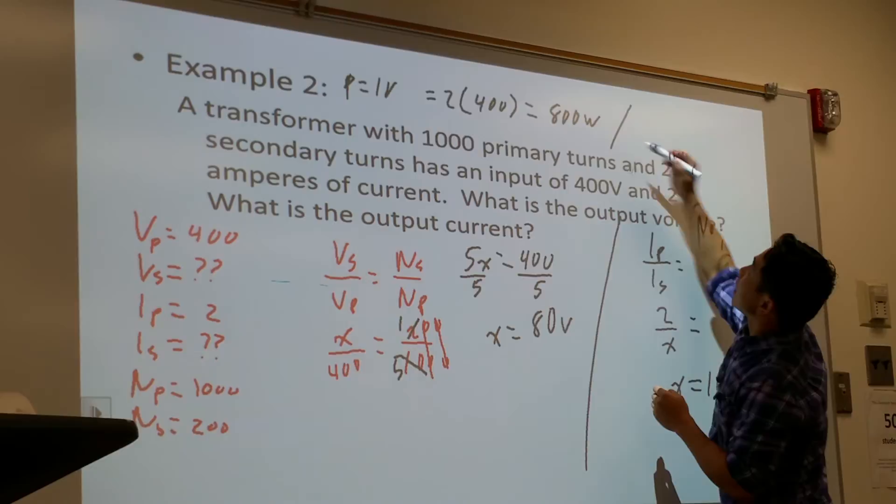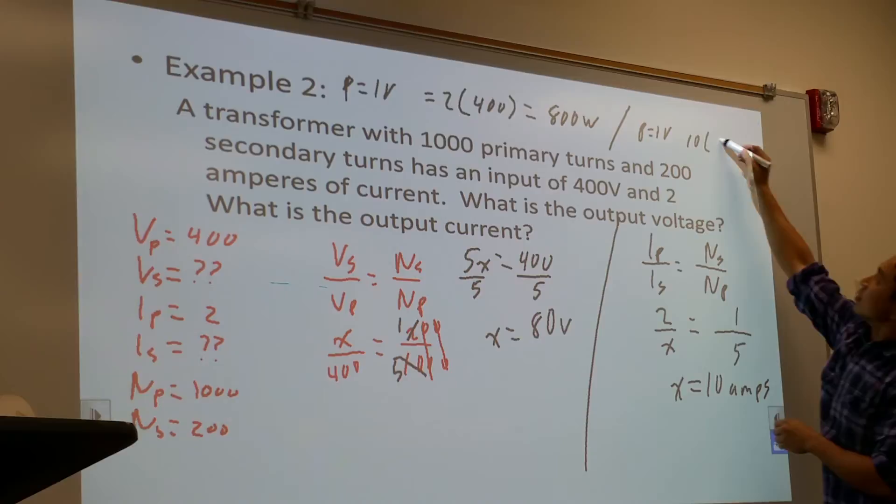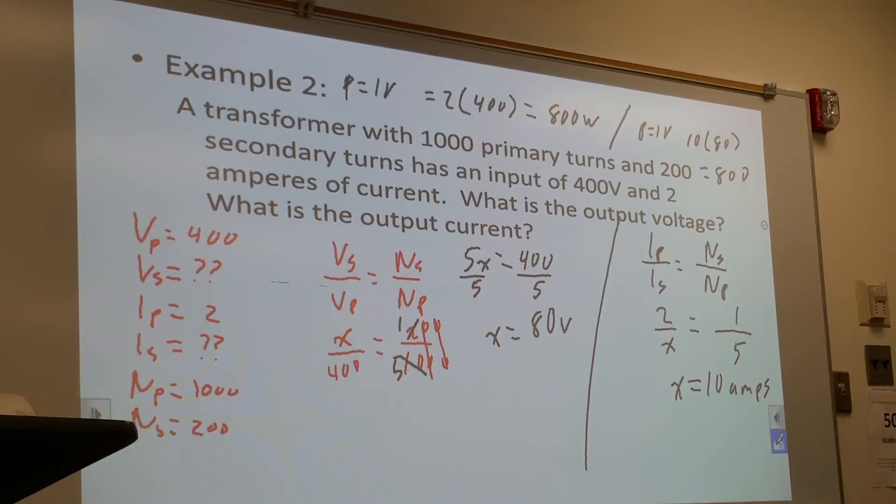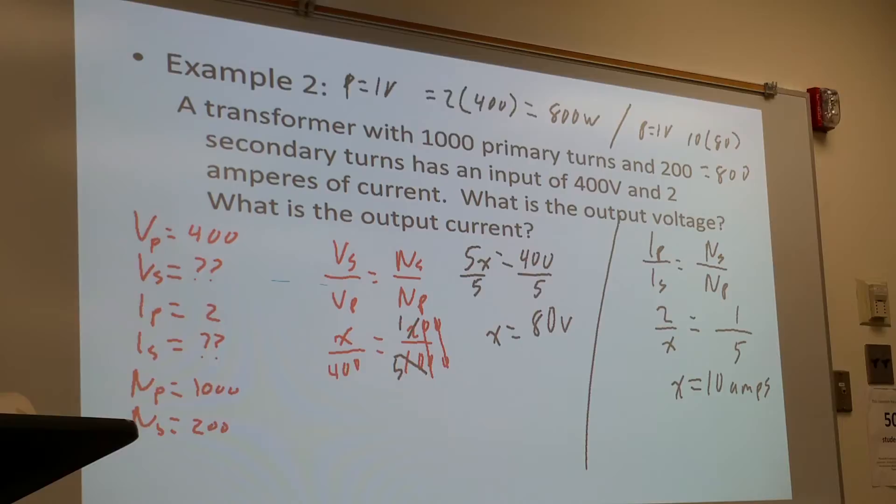Output side, current is 0.4, voltage is 80, which is also 800 watts. So input and output power is the same. Input power works.